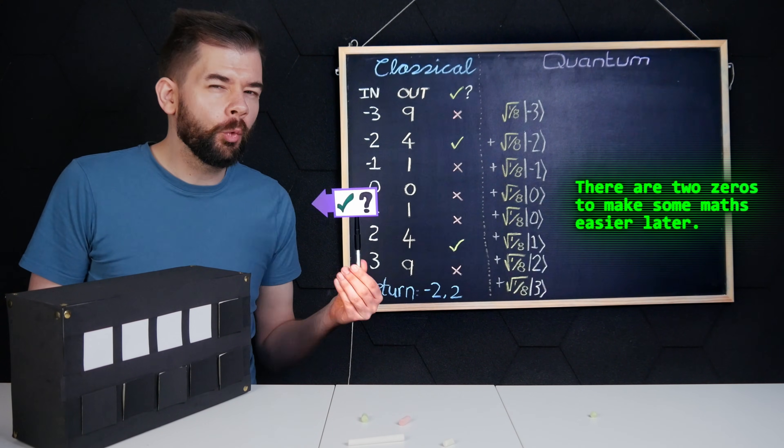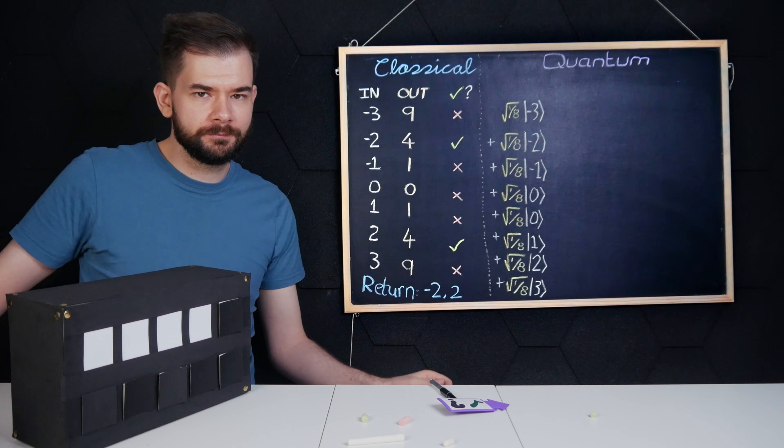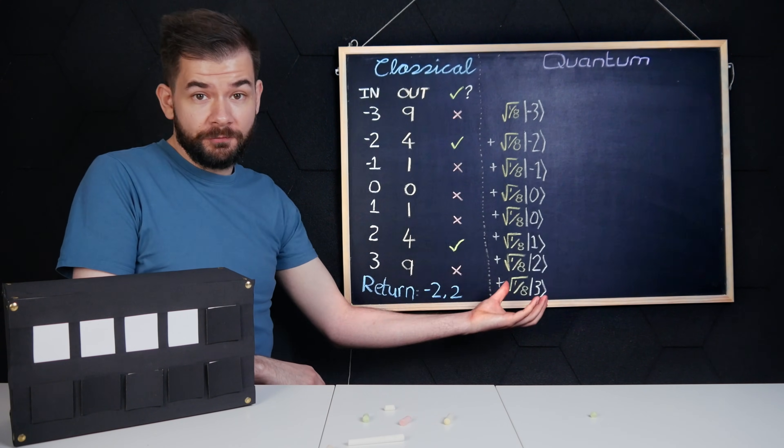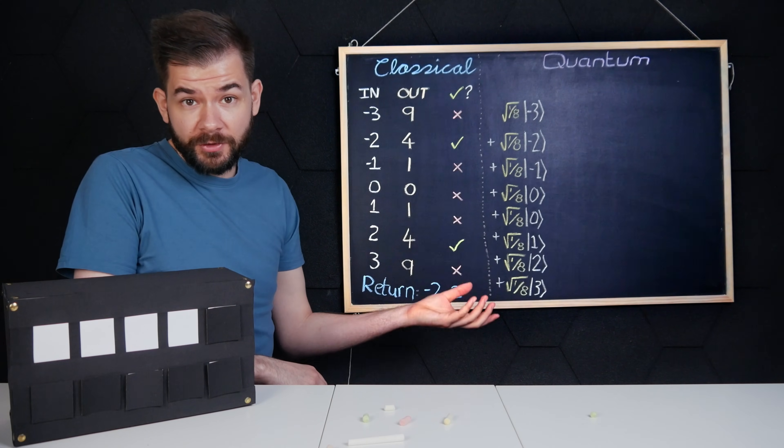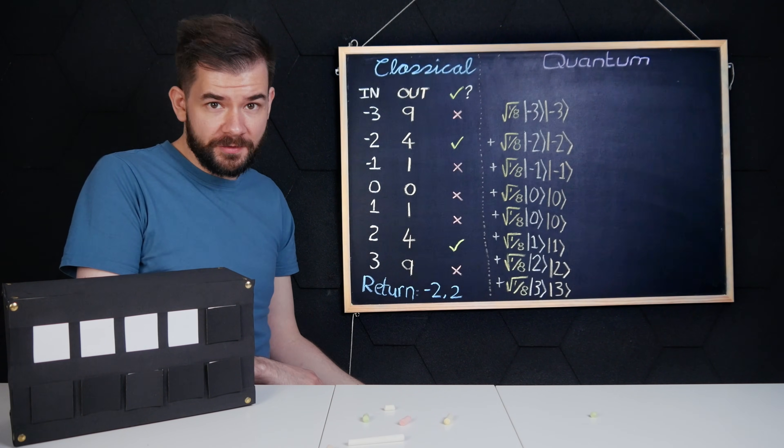Now, a clever thing we can do is entangle two sets of qubits. So I've got one set of qubits, and there's a one-eighth chance that I'll observe each of these outcomes, and I'll entangle them with another set of qubits. There are many ways to write this, but today I'll just concatenate them.